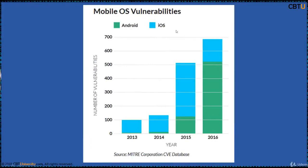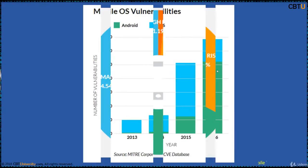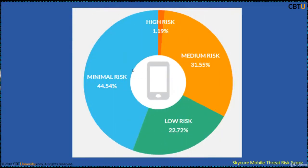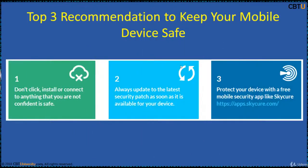This is mobile OS vulnerabilities of Android and iOS from sources meter cooperation. This is a SkyCure mobile threat risk score. As per this, over half of the devices are risky. SkyCure recommends three ways to keep your mobile device safe: don't click, install or connect to anything that is not safe; always update to the latest security patches as soon as available for your device; protect your device with a free mobile security app like SkyCure.